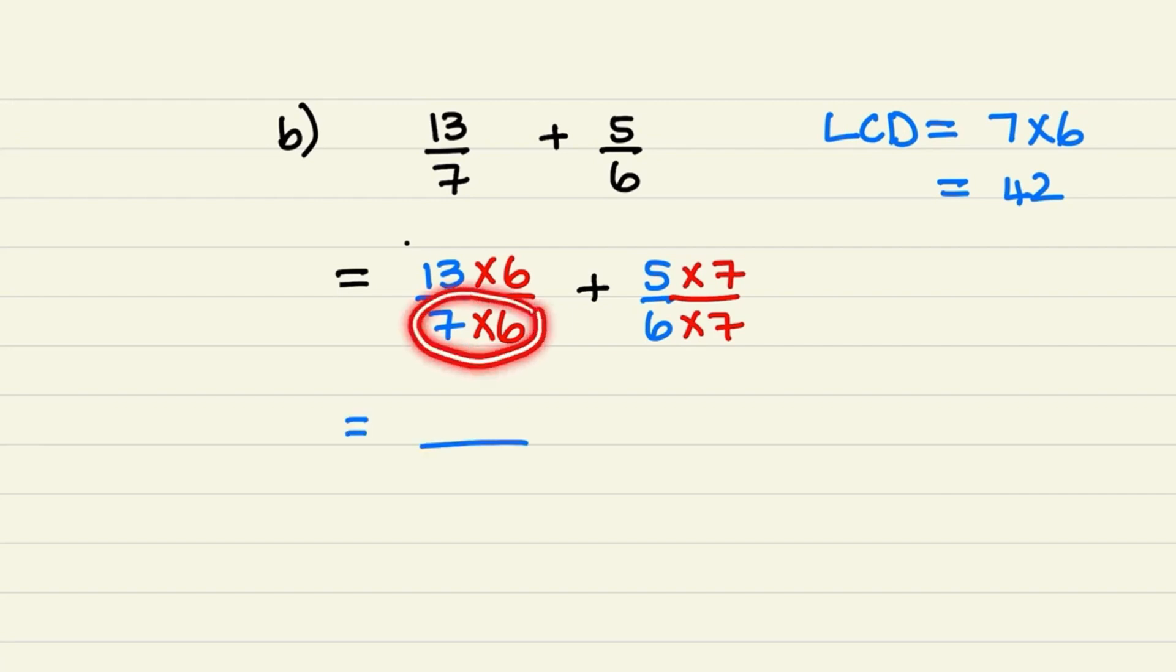So 7 times 6 is equal to 42. And 13 times 6 is equal to 78.